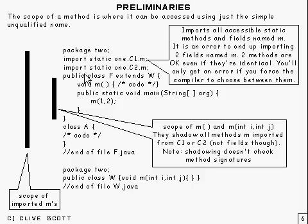Now, the next thing to talk about is scope. And the scope of a method is where it can be accessed using just the simple unqualified name. So a simple name like that.